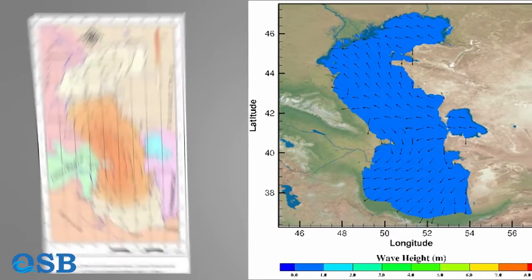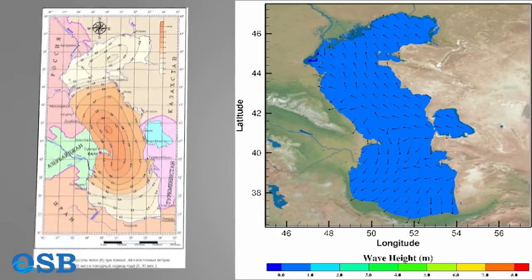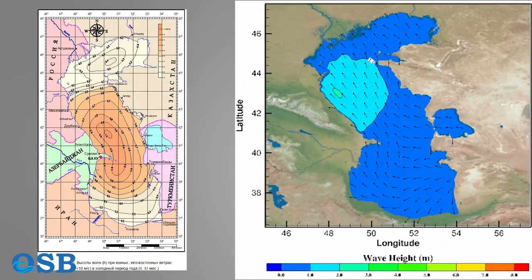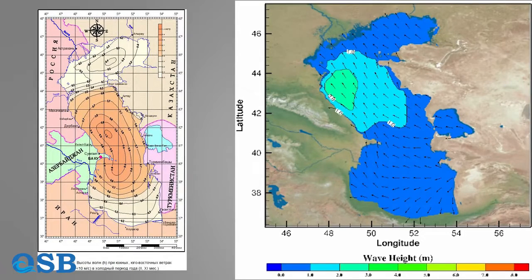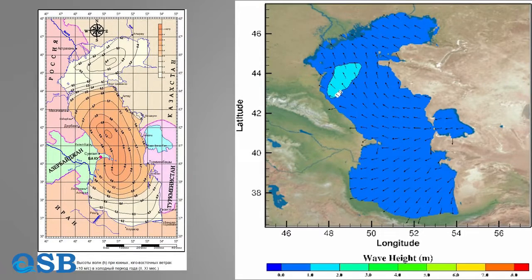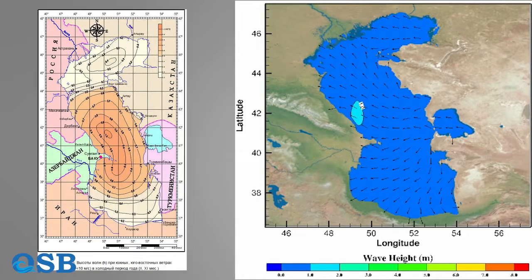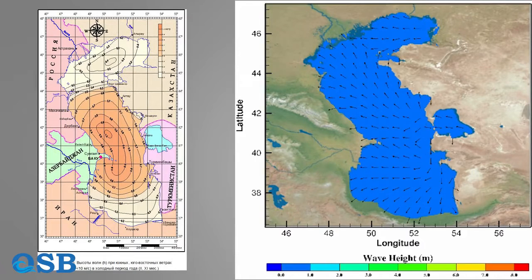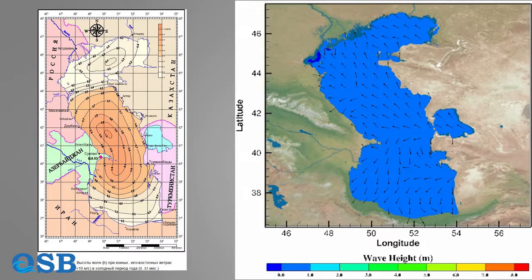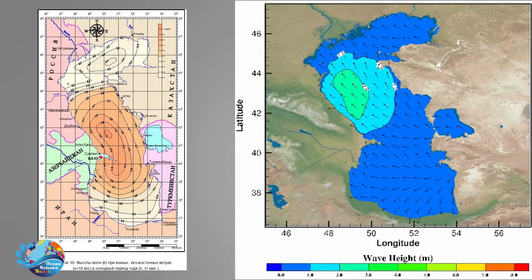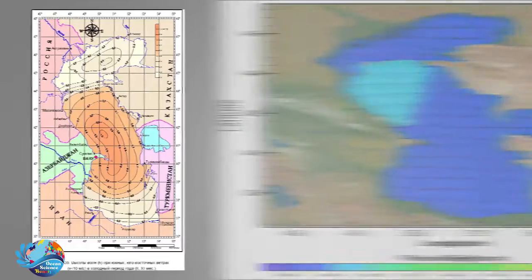In the Caspian Sea, if we classify waves based on their direction, roughly 36% propagate from the north or the northwest, while 32% are from the southeast and the south. Only 12% of the waves propagate towards the east. Other wave directions are weak and unsteady.